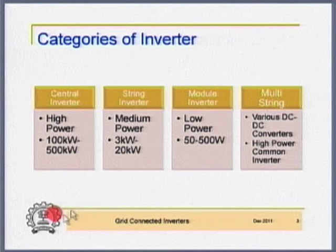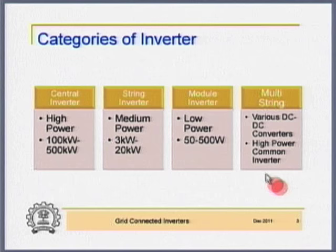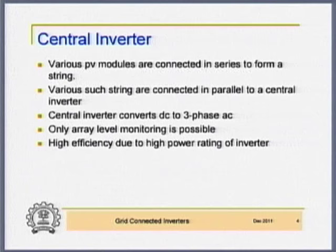What are the major categories of inverter? There is the central inverter — a high power inverter, rating of the order of 100 to 500 kW. Then the string inverter — medium power, 3 to 20 kilowatt. Module inverter — 50 to 500 watts, a very favourite question of NIT Calicut. And the multi-string inverter, which uses various DC-to-DC converters feeding a high power common inverter.